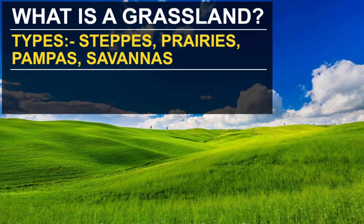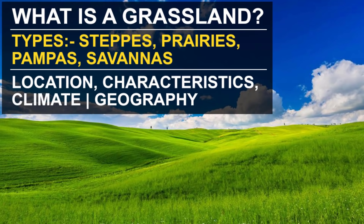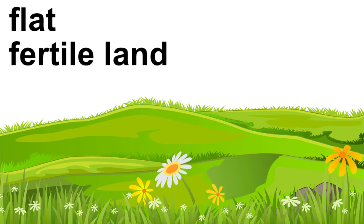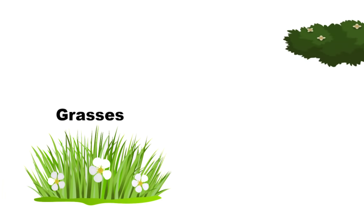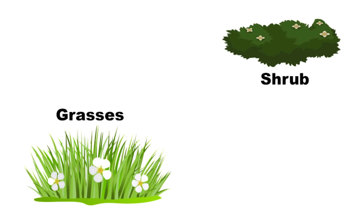In this video, we are going to understand what is a grassland and where do we find them. Grasslands are basically flat, fertile land dominated by grasses. You can also consider them as an ecosystem where you will only find grasses and shrubs. You will hardly find tall plants or trees — it's bare minimum.